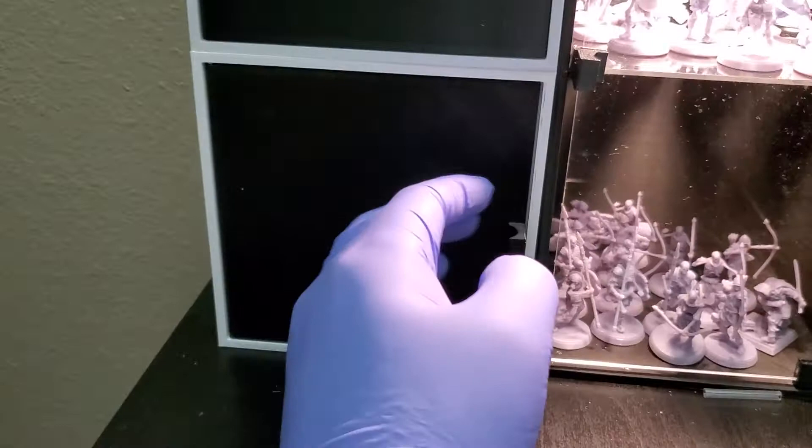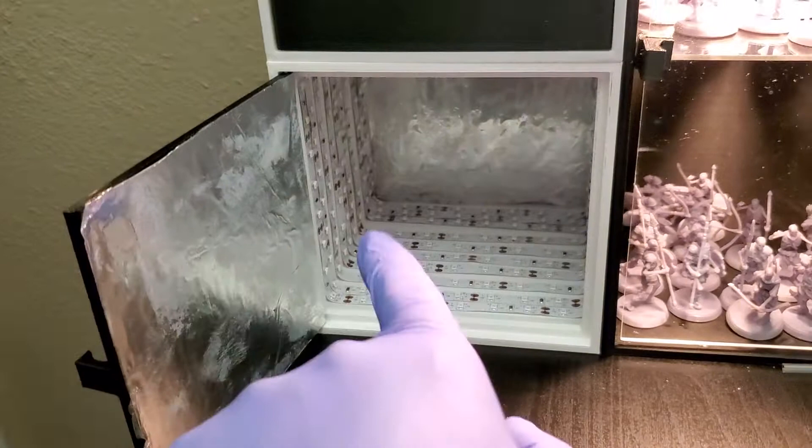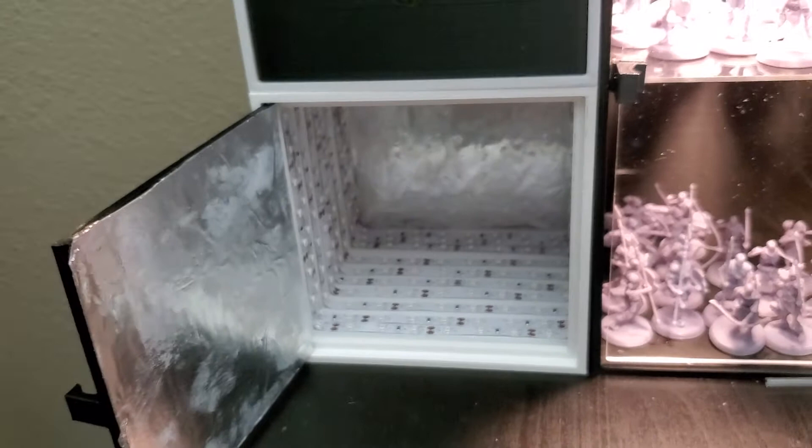Alright, so let's talk a little bit about this paint station set. This thing is printed in three pieces: the front door, the actual housing, and then that back wall there. The reason why I printed it in three pieces is so that you can stick your hand inside the box while you're coiling the LED lights.